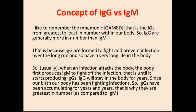I like to remember the mnemonic GAMED — that is the immunoglobulins from greatest to least in number within our body. IgG are generally more in number than IgMs, and IgD are the least in number. IgG are formed to fight and prevent infection over the long run and so have a very long life in the body. Usually when an infection attacks the body, the body first produces IgMs to fight off the infection, until it starts producing IgG. IgG will stay in the body for years. Since our birth, our body has been fighting off infections, so IgGs have been accumulating for years and years — that is why they are greatest in number compared to IgM.